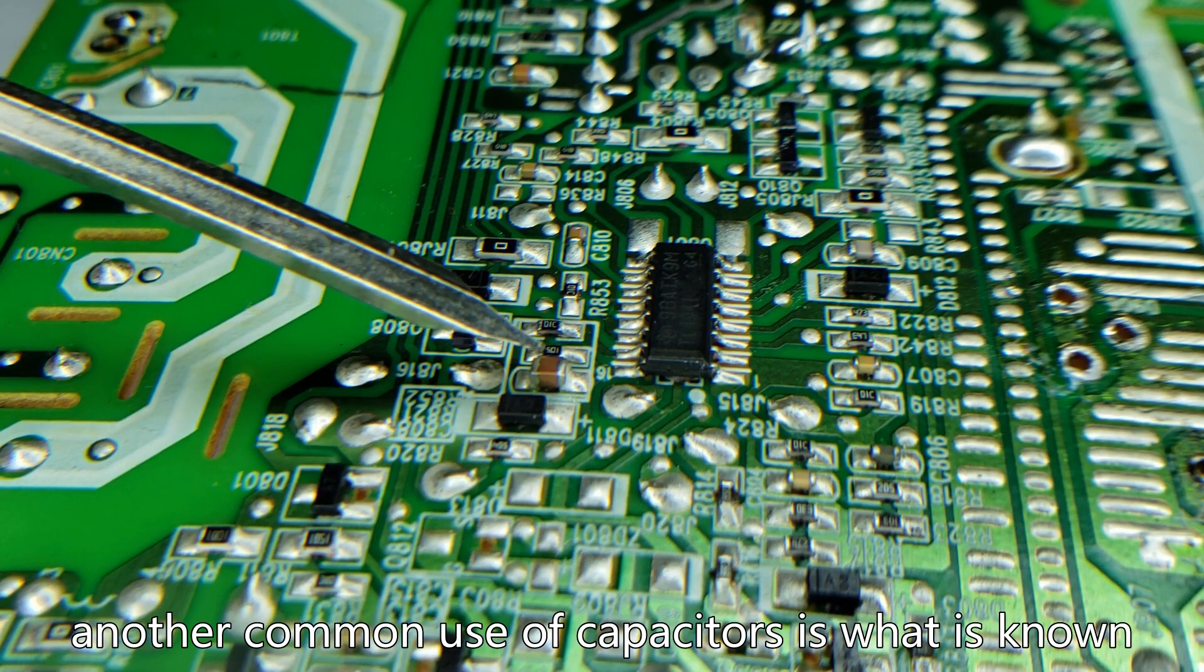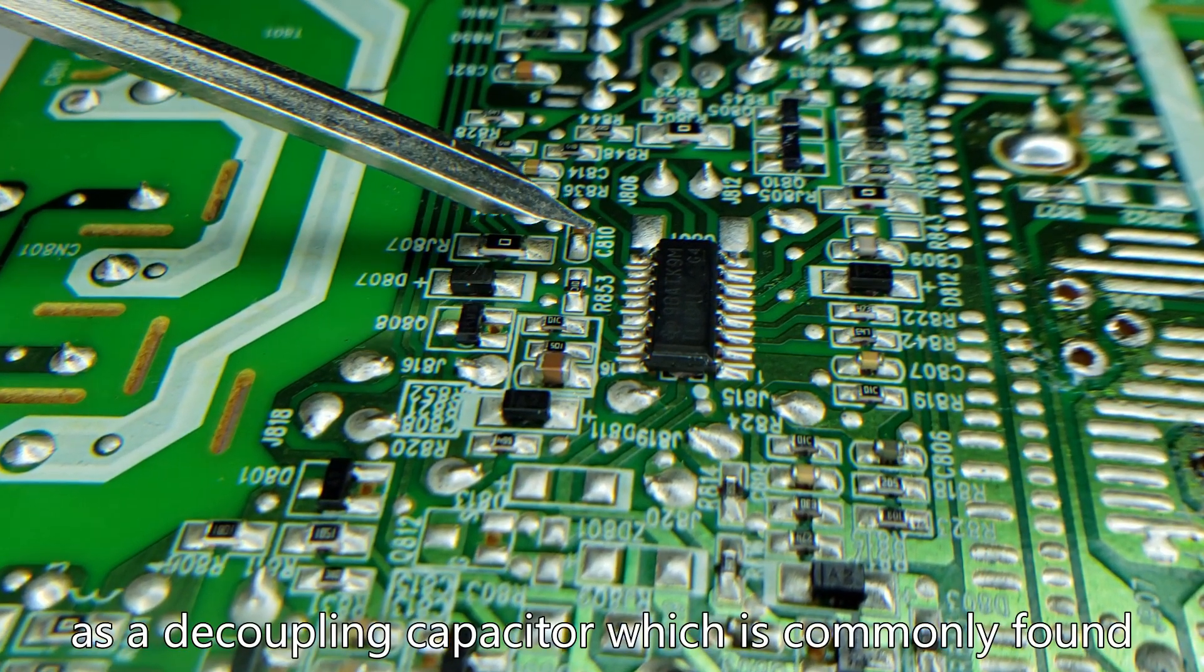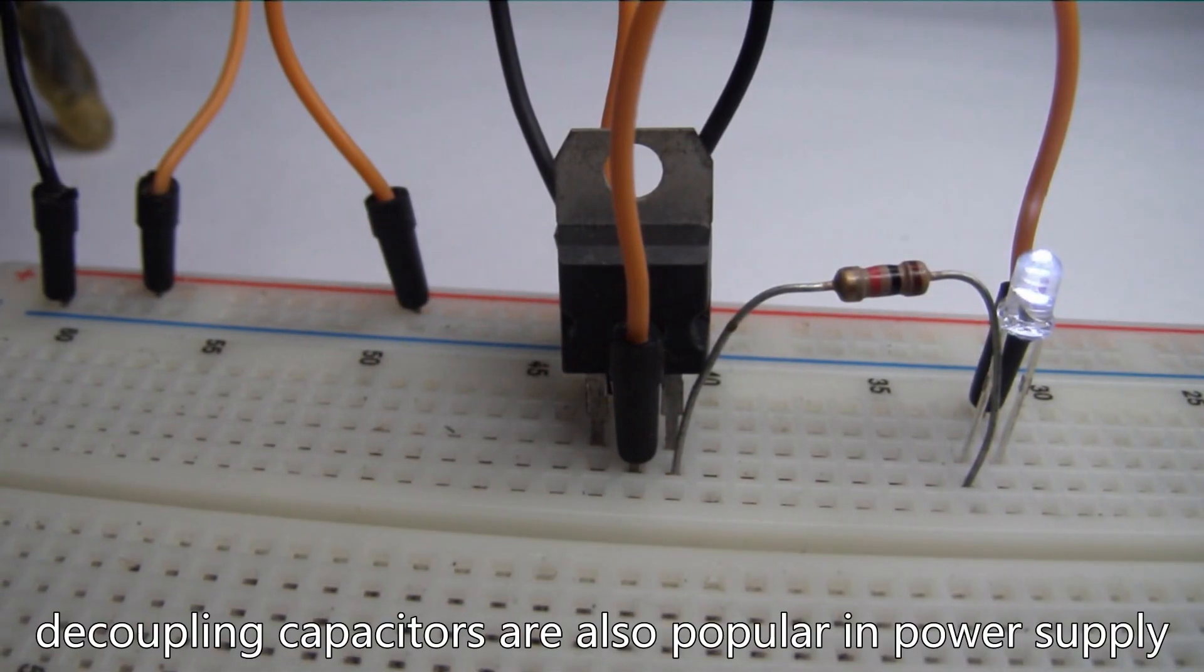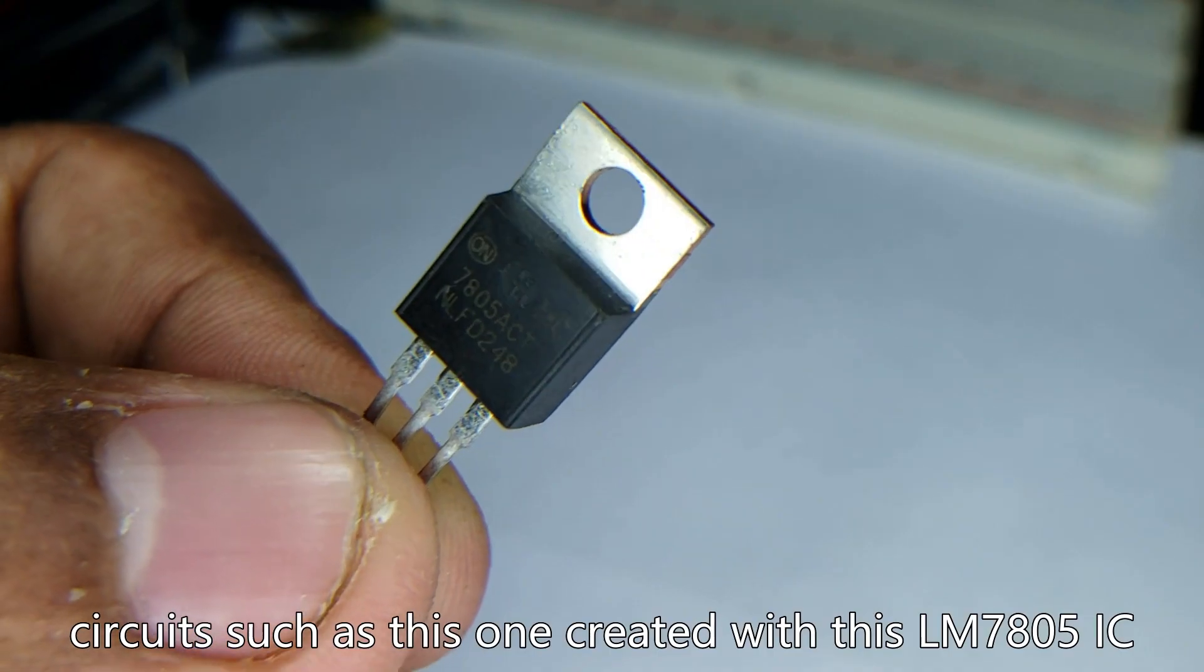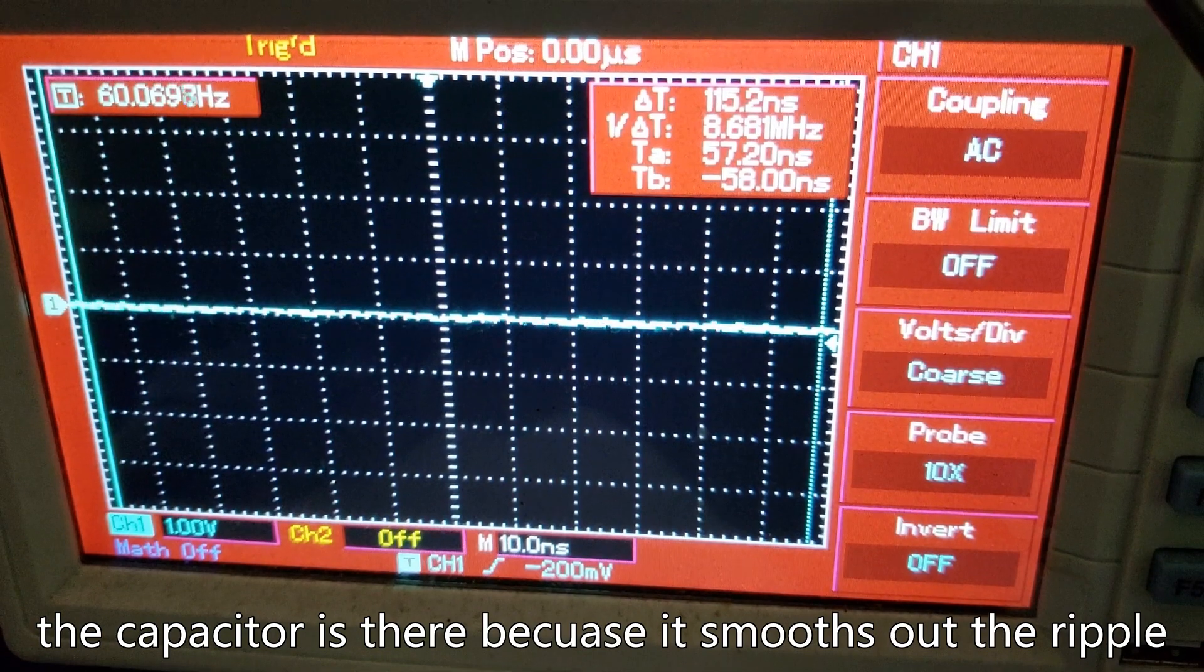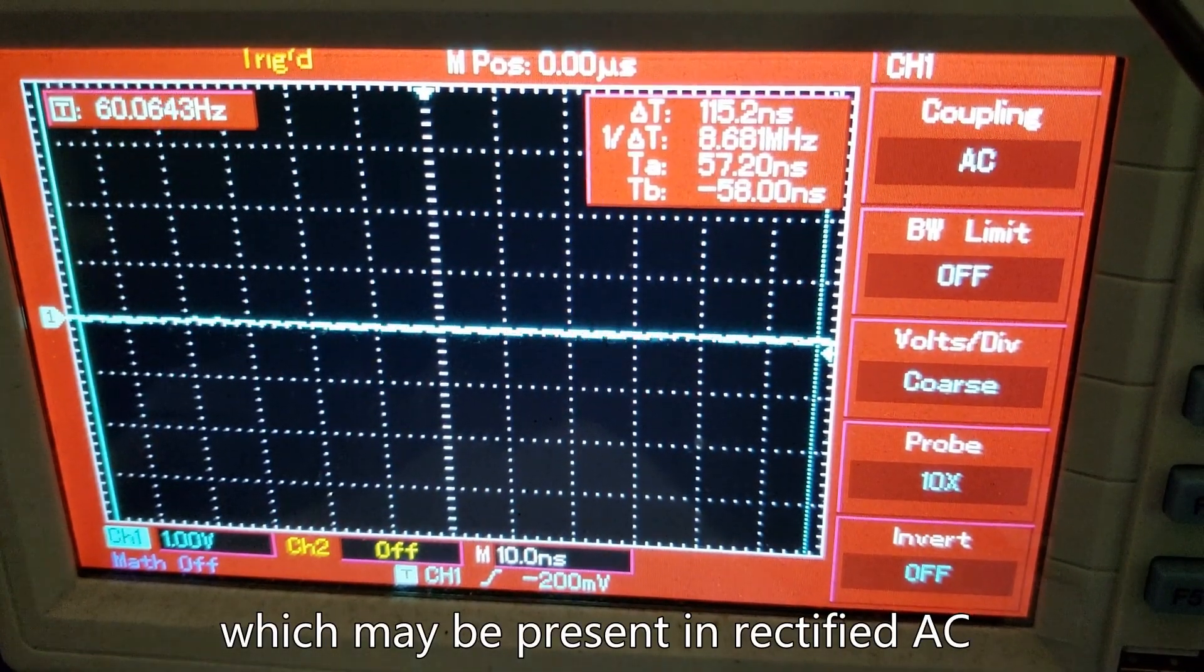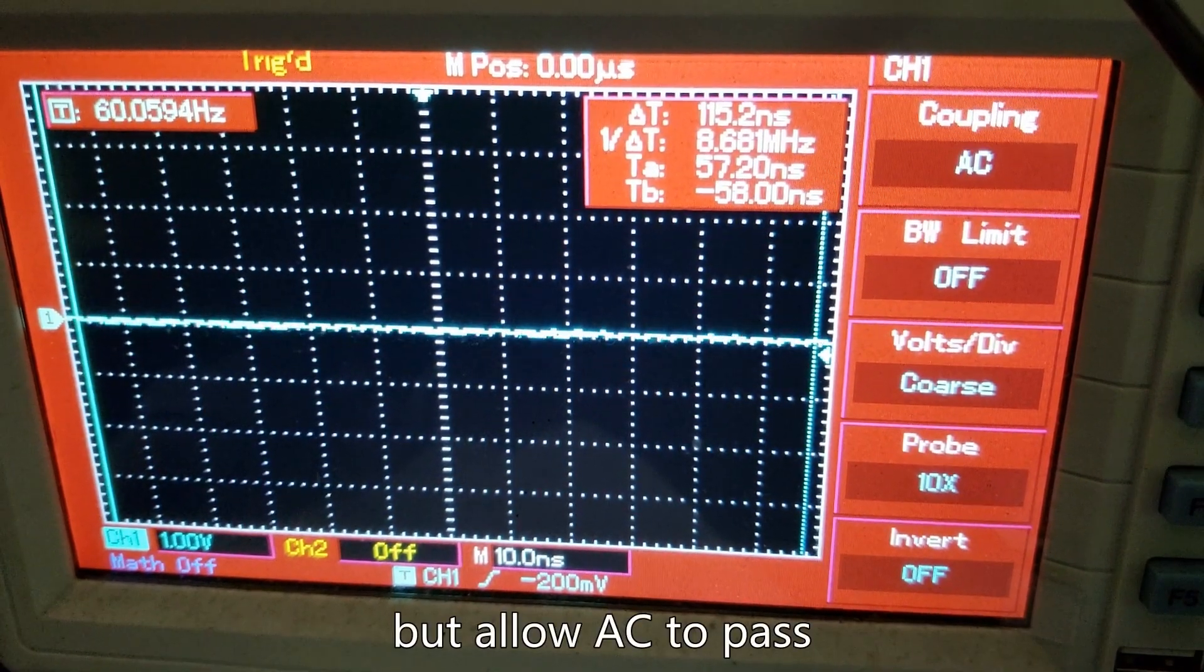Another common use of capacitors is what is known as a decoupling capacitor which is commonly found around the pins of ICs. Decoupling capacitors are also popular in power supply circuits such as this one created with this LM7805 IC. The capacitor is there because it smooths all the ripple which may be present on the rectified AC. Capacitors can do this because they will block DC but allow AC to pass.